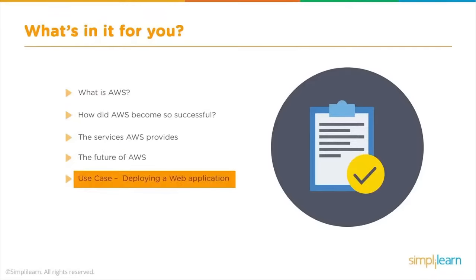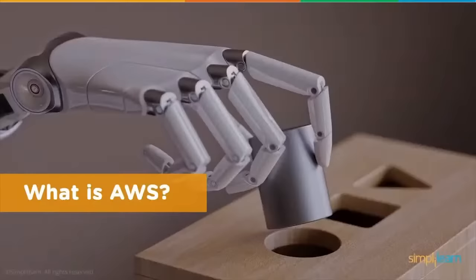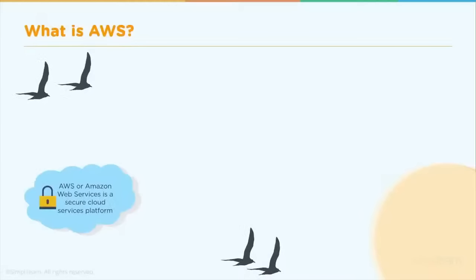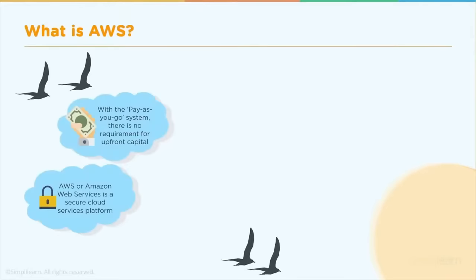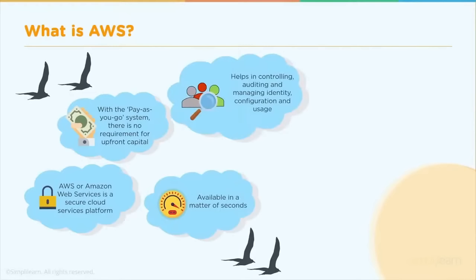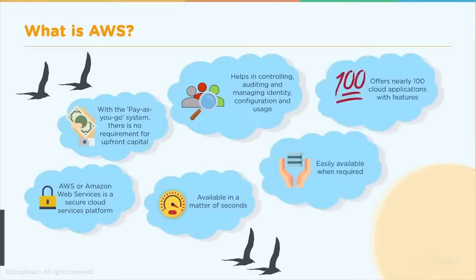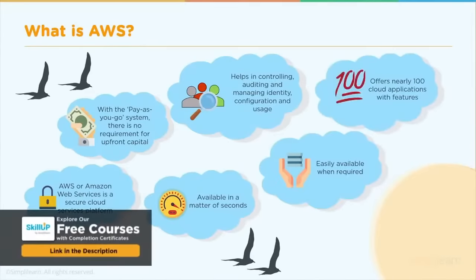Let's talk about what AWS is first, then how AWS became so successful, the different types of services AWS provides, and what's the future of cloud. AWS or Amazon Web Services is a secure cloud service platform. It is also a pay-as-you-go billing model with no upfront or capital costs. The service will be available in a matter of seconds. With AWS, you can also do identity and access management — authenticating and authorizing a user or a program on the fly. Almost all services are available on demand and instantaneously. Amazon offers 100 plus services and this list is growing every new week.